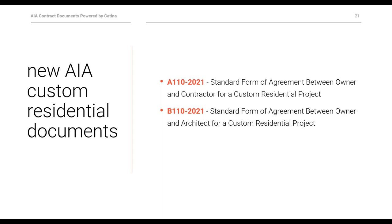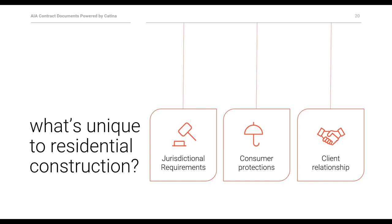What is unique to residential contracts is jurisdictional requirements — laws that protect consumers from unscrupulous residential contractors. Most specific to residential construction is the client and how they understand a residential project. The client is emotionally invested in their home and is probably not knowledgeable about the construction process or terminology — for example, what is an allowance? The architect and builder may have to do a lot of explaining, managing of expectations, and work hard to keep relationships going smoothly.